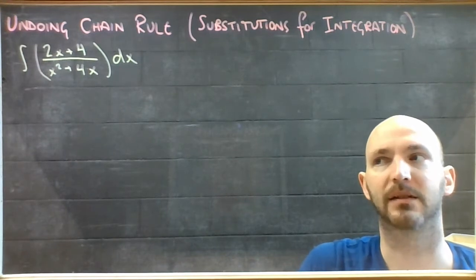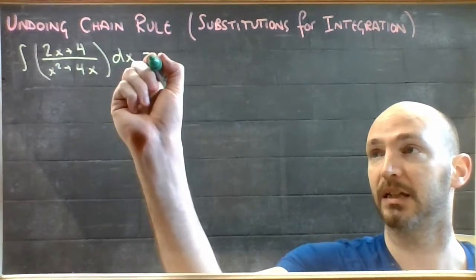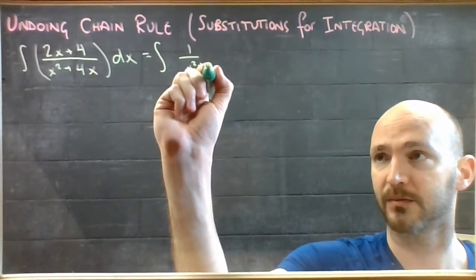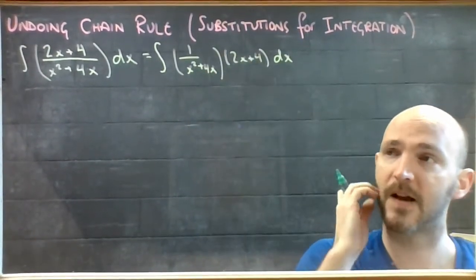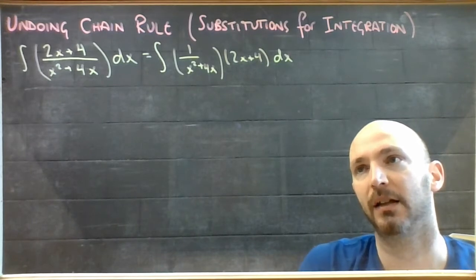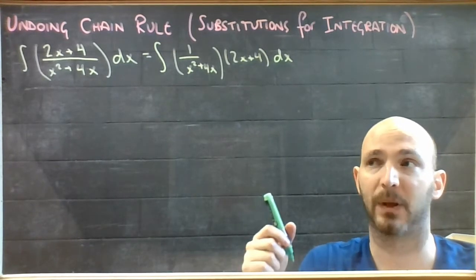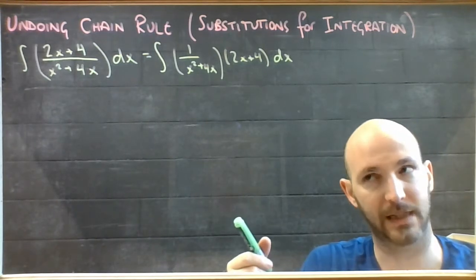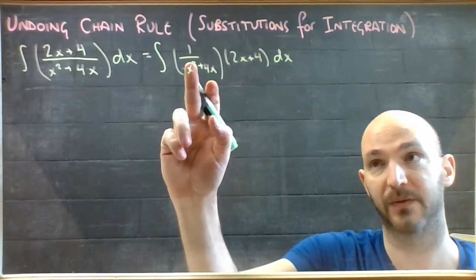The next example doesn't look like a function multiplied by a function, so I'm going to fix it so that it does. This would be the integral of 1 over x squared plus 4x, multiplied by 2x plus 4 dx. I see that it's a thing times a thing inside my integration, so this either came from a chain rule or a product rule that factored nicely. I'm going to check to see if it came from chain rule.